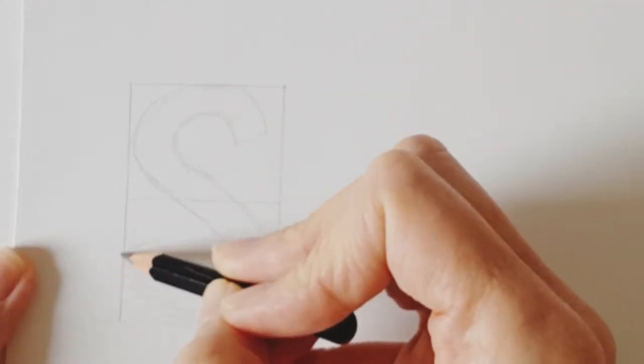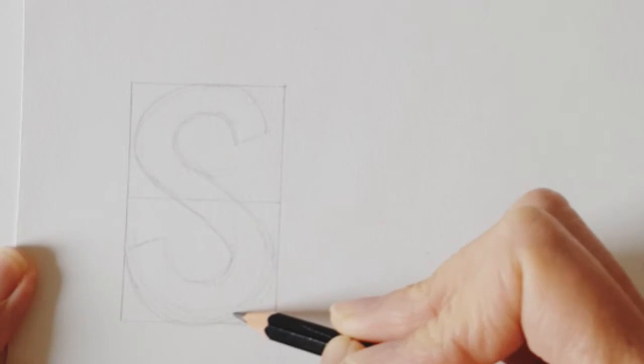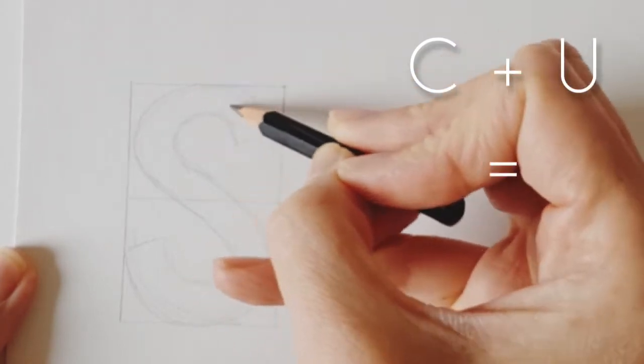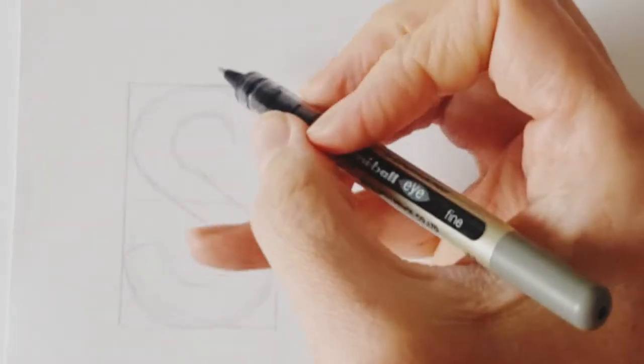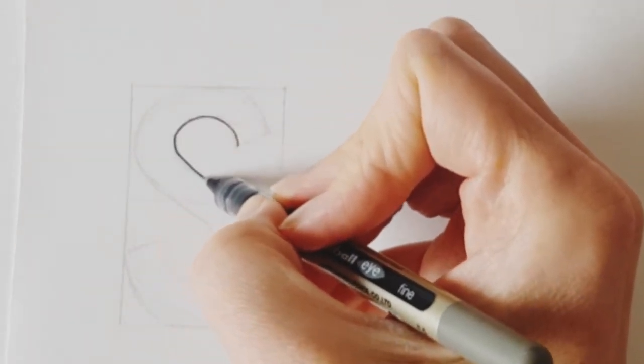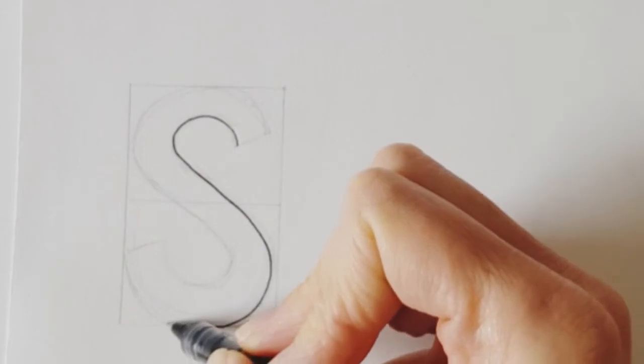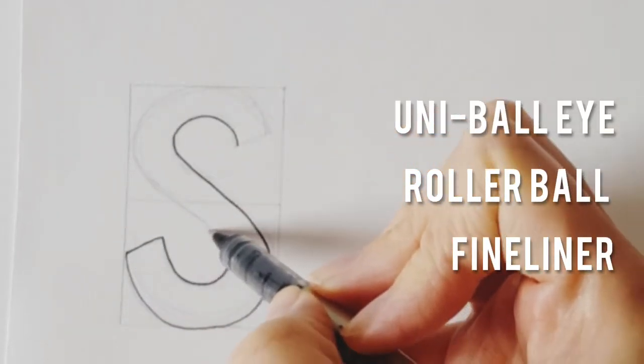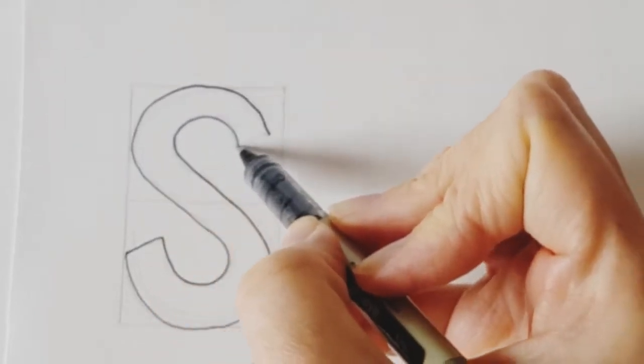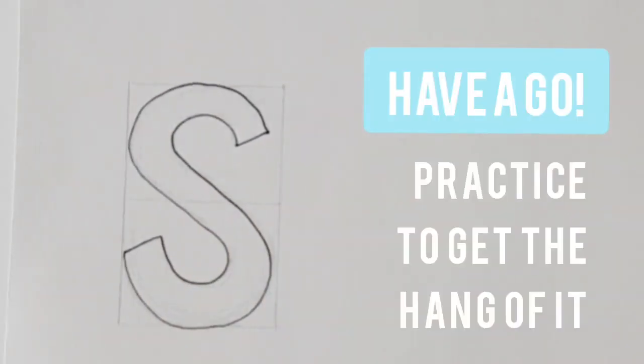You can see there that we've got our basic S shape already. Just need to draw the little ends on. You can still go over and refine the shape if you're not quite happy with it. That's the whole bonus of using sketching and drawing really lightly. Then I'm just going to use my fine line pen to finalize my edges, and there's my perfect S.